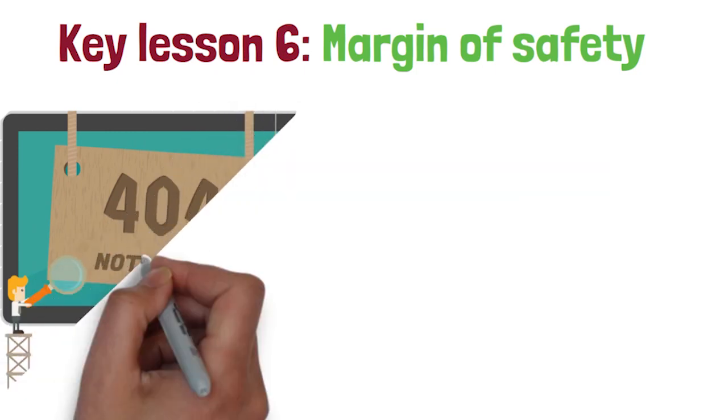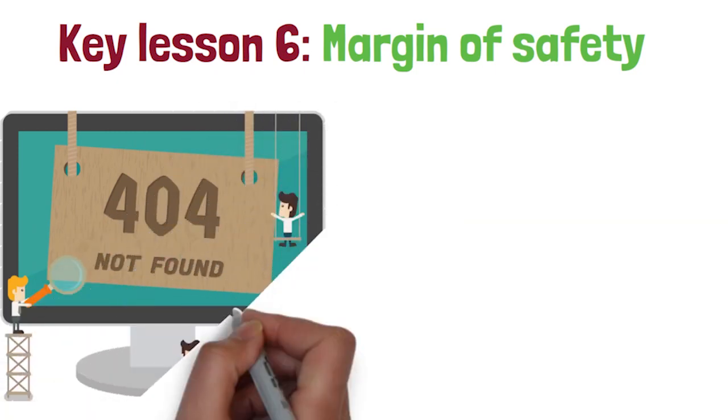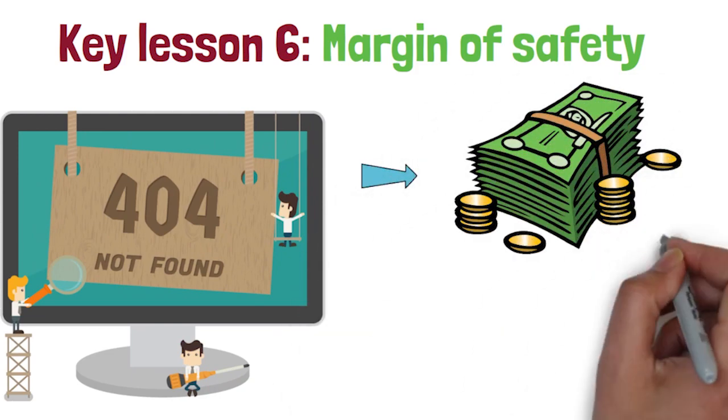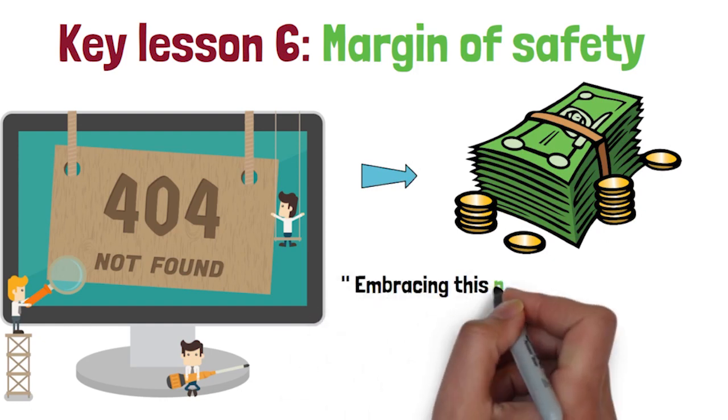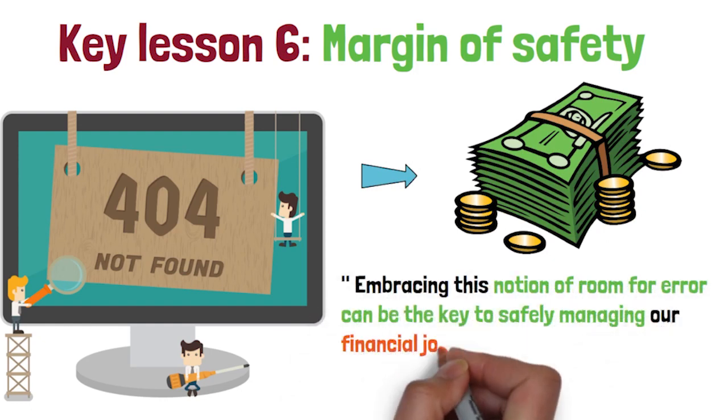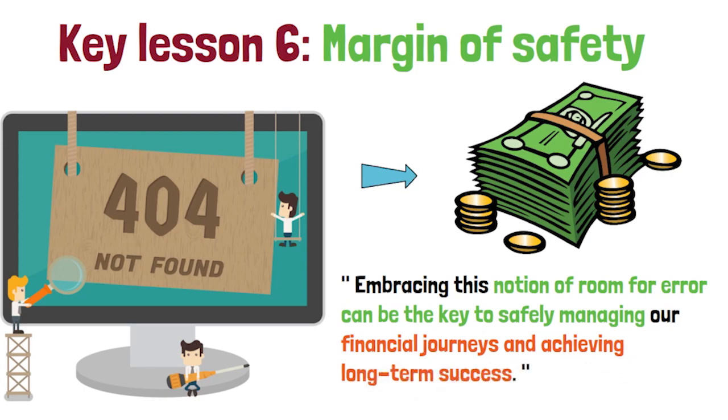The margin of safety, also known as room for error or redundancy, is a crucial concept when navigating a world governed by probabilities and uncertainties, something that encompasses almost everything related to money. Embracing this notion of room for error can be the key to safely managing our financial journeys and achieving long-term success.